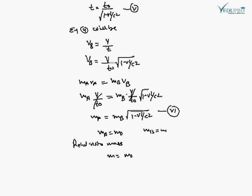तो हम देख रहे हैं M0 under root 1 minus V square upon C square.